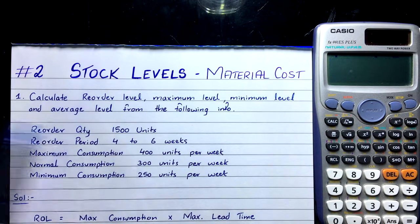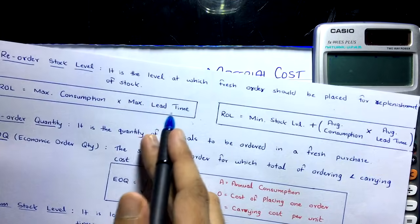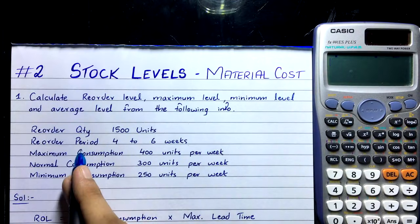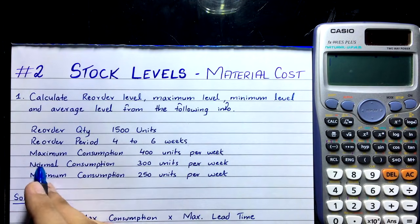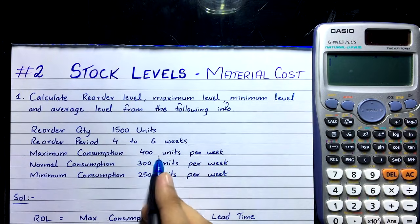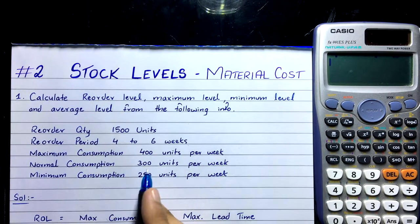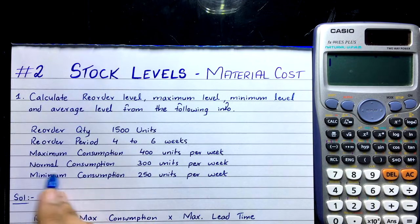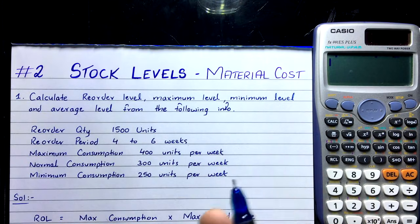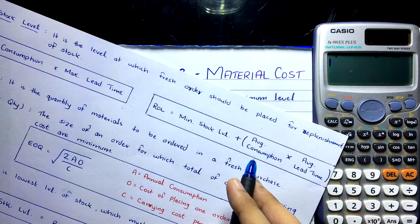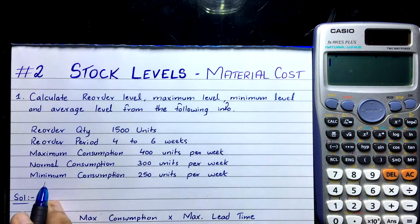The reorder period means lead time — how much time does it take the supplier to deliver the materials when you place an order. We are also given: maximum consumption — 400 units per week; normal consumption — 300 units per week (normal consumption is the same as average consumption); and minimum consumption — 250 units per week.